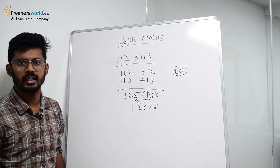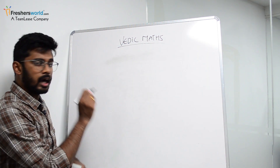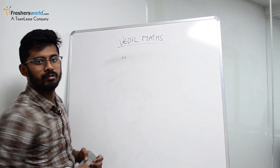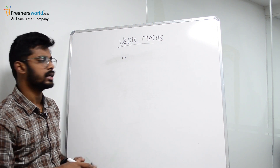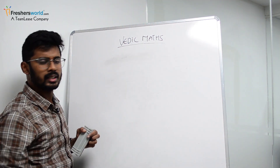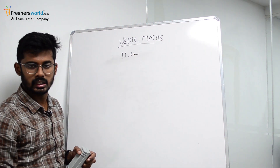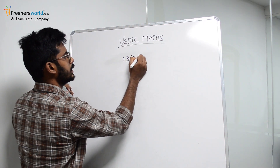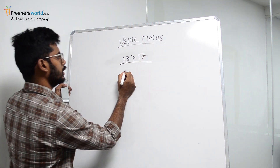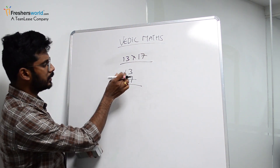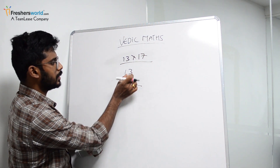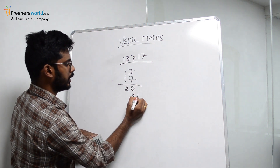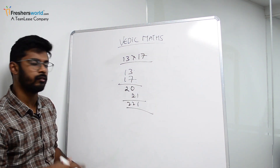Now let's talk about multiplying teens — numbers like 11, 12, 13, 14, 15, 16, 17, 18, 19. For example, 17 into 13: either do 13 plus 7 or 17 plus 3 — both give 20. Then 7 into 3 is 21. So the answer is 221. That easy!